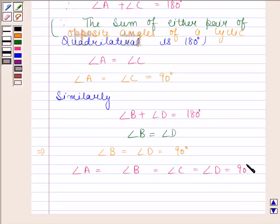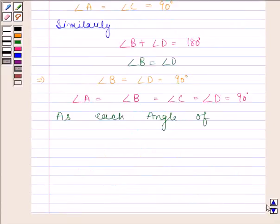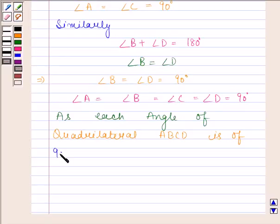So, as each angle of quadrilateral ABCD is 90 degrees, therefore ABCD is a rectangle.